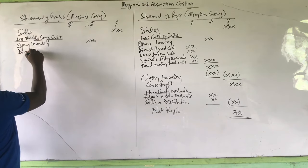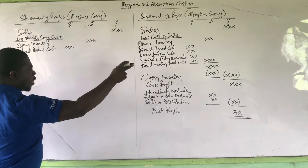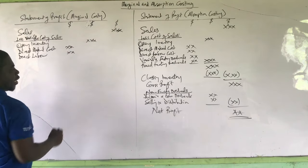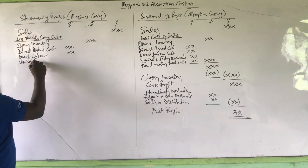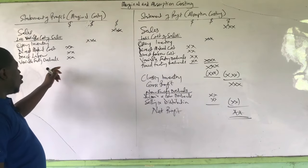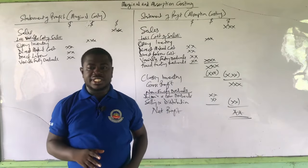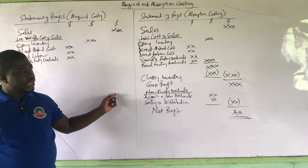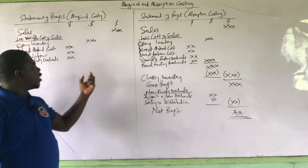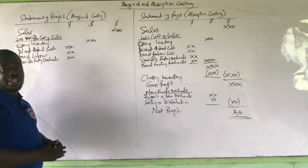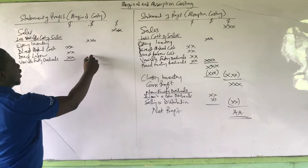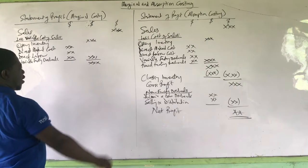So we can start with our opening inventory, just like we started with the absorption costing, and then we add our production cost. But just as we also split the production cost into components, we are going to split them, taking into consideration the fixed and variable components. In other words, we are going to skip the fixed factory overheads — they will not have a place here. So we write the direct material cost, then the direct labor if there is, and then variable factory or production overheads. That will be all. We are no longer going to add the fixed factory overheads.